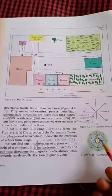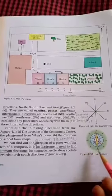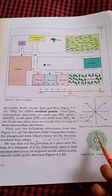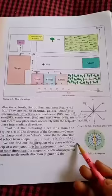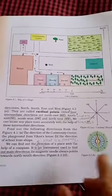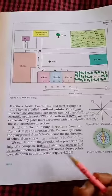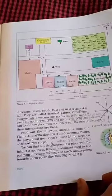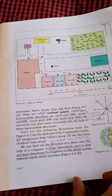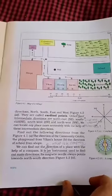अगर आपको north-south direction पता है तो आप east और west को भी पता कर सकते हैं। जैसे — यह north हो गया, यह south है, तो इसके left side में east होगा और इस side में west होगा। So, compass के through आप easily सारे directions पता कर सकते हैं। I hope components of map के direction part में इतना ही है — आप लोग समझ गए होंगे। Thank you students.